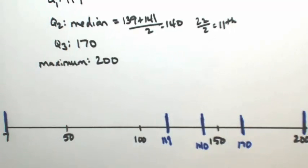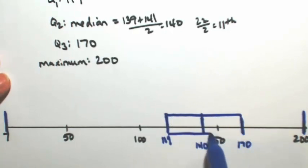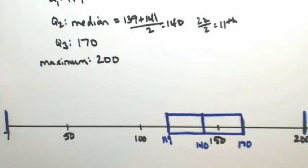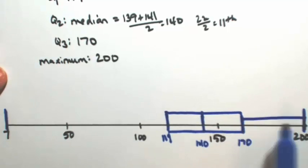In the box and whisker plot, we're going to have a box that's around Q1, Q2, and Q3. And then we're going to have whiskers extending to the min and the max.